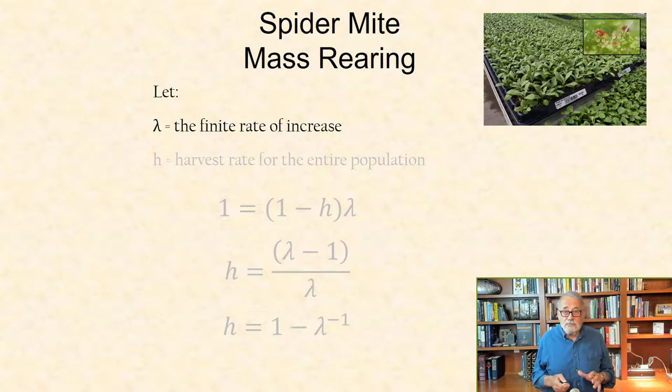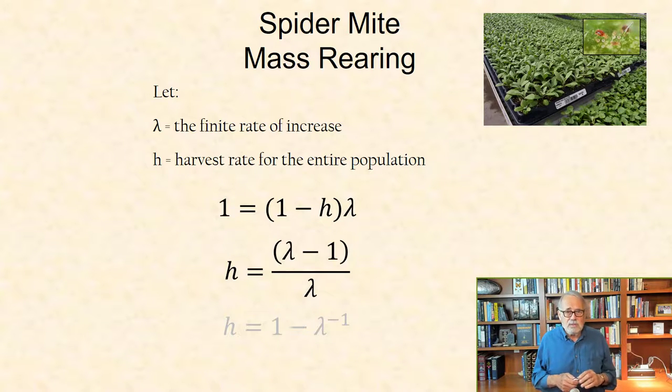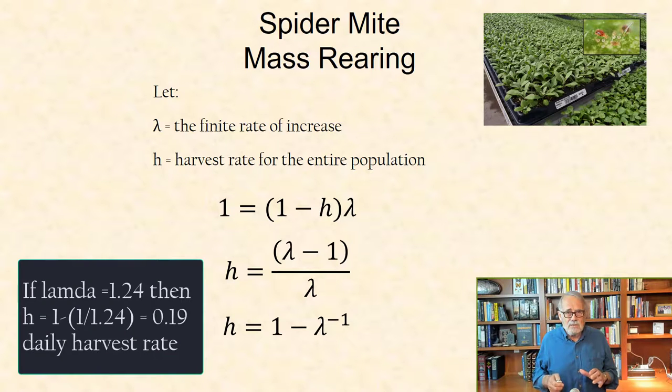Let lambda denote the finite rate of increase of the population and h, the harvest rate for the entire population, then the fraction of all stages that can be harvested, that is, removed, while maintaining population replacement, is a solution to this equation.